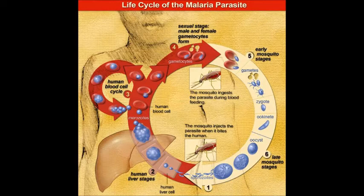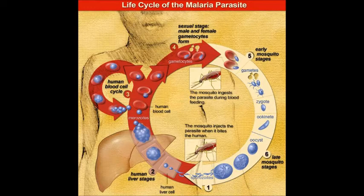Each malarial species has four distinct stages of morphology. When the mosquito bites, a sporozoite is introduced into the human bloodstream, which very quickly moves to the liver. There it multiplies in liver cells, eventually destroying those cells and being released into the bloodstream. That stage then invades red blood cells, where merozoites multiply and eventually destroy the cell, bursting out to reinvade new red cells.